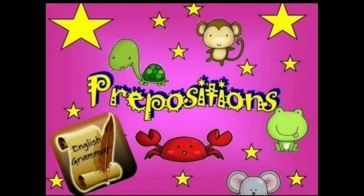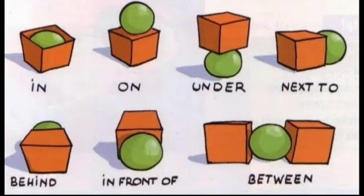Prepositions are the words that help in connecting to nouns. They tell us the position of the noun — where they are. So prepositions are the words that connect to nouns and tell the position of the noun. Now we will see the use of prepositions with the help of a ball and a box as an example.